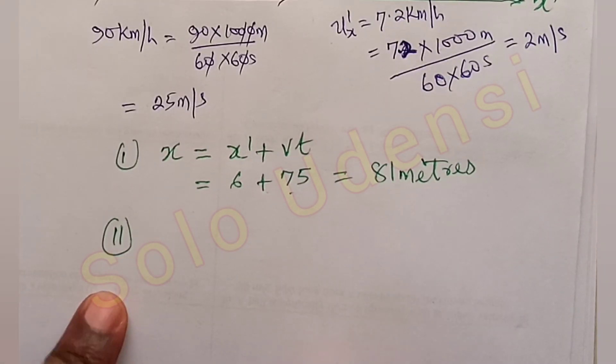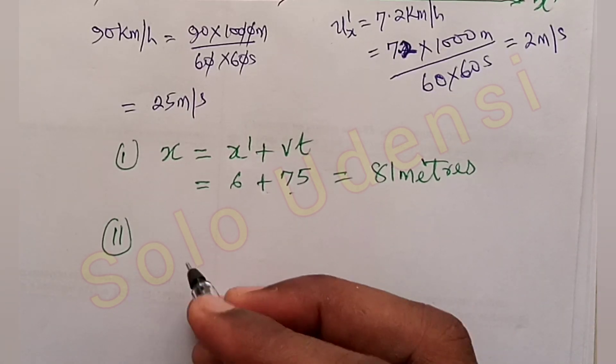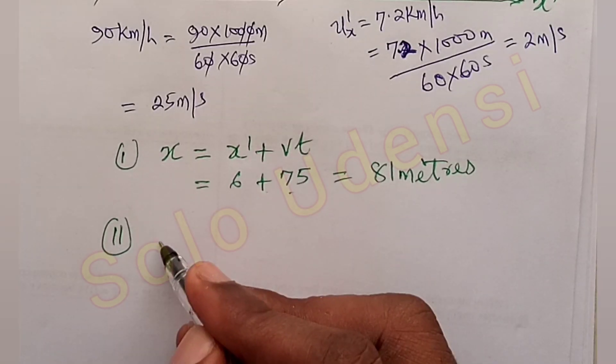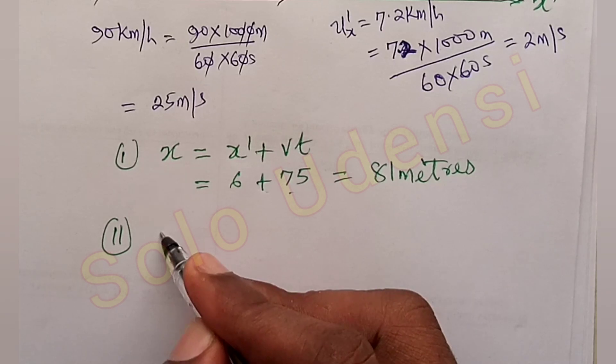The speed of the passenger relative to the observer on the ground. You see that from this equation, we can differentiate it with respect to time.